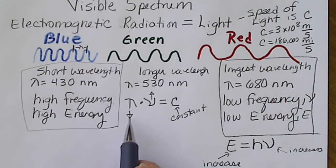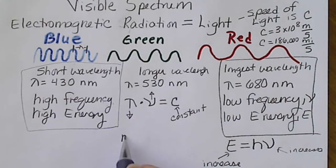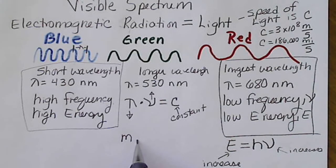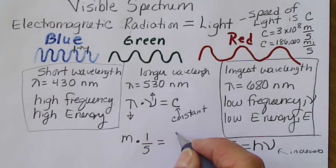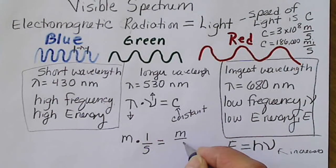If we report the wavelength in meters and multiply that by the frequency, which has units of per second, we get the speed of light in meters per second.